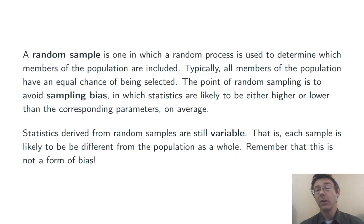Statistics derived from random samples are still variable. Individual samples are likely to be different from the population as a whole, just due to the random process. This is not a form of bias. On average, that statistic will still equal the parameter.